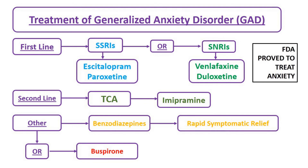Imipramine, a tricyclic antidepressant, is the second-line treatment. Other treatment options include benzodiazepines. Benzodiazepines are most useful when used early in the treatment alongside an antidepressant, as they have anxiolytic properties and provide rapid symptomatic relief. If the patient cannot tolerate benzodiazepines, he or she can take buspirone.